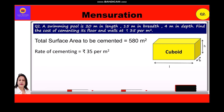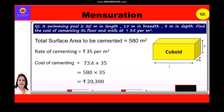The cost of cementing the swimming pool = total surface area × 35 = 580 × 35 = rupees 20,300.